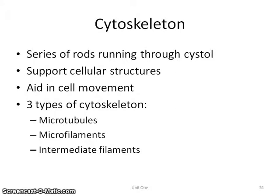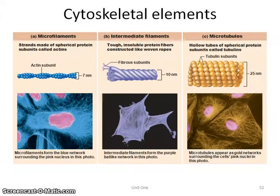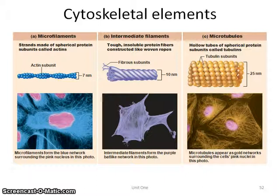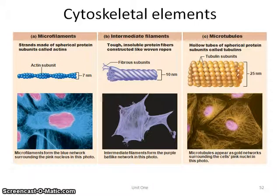We need to hold up our cell, and it needs to have a system. Just like your body has a skeleton to hold you up, the cell needs that too, and we call it a cytoskeleton. It's a bunch of rods running through the fluid to help keep it in its structure. There are three types: microfilaments, intermediate filaments, and microtubules. These actual microscopic pictures show how they're put together — kind of like a spider web providing scaffolding for the cells themselves.